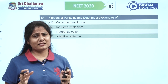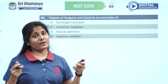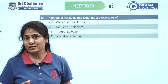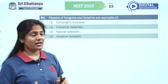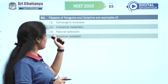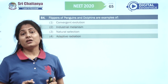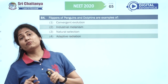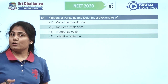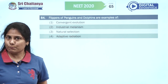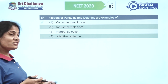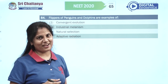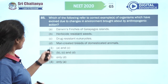Flippers of penguins and dolphins — first try to recall whether it is analogous or homologous. These are analogous organs with similar function but different origin. Analogous organs support convergent evolution.